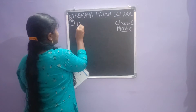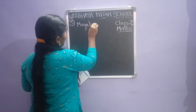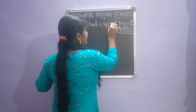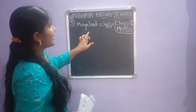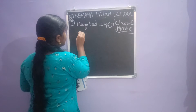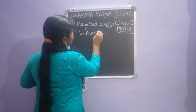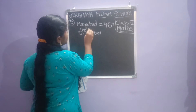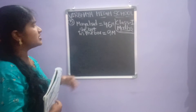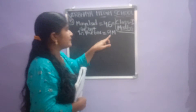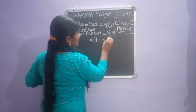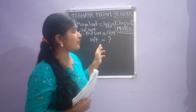Maya had 46 marbles. Here write M — M means marbles. Maya had 46 marbles. She kept 9 marbles in the box. How many marbles are left? Question mark means we have to find the number of marbles left.